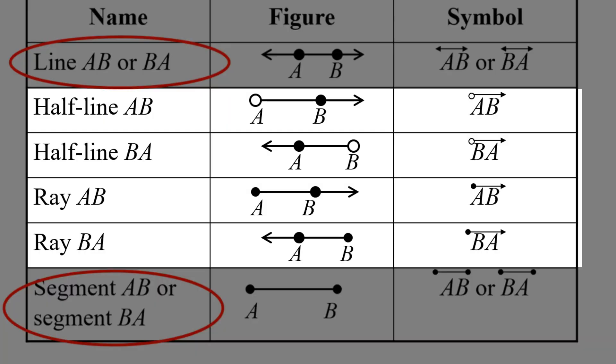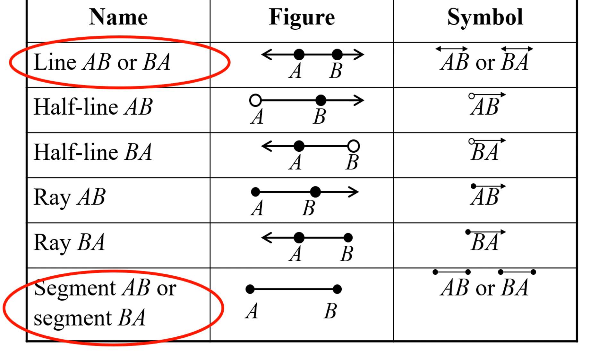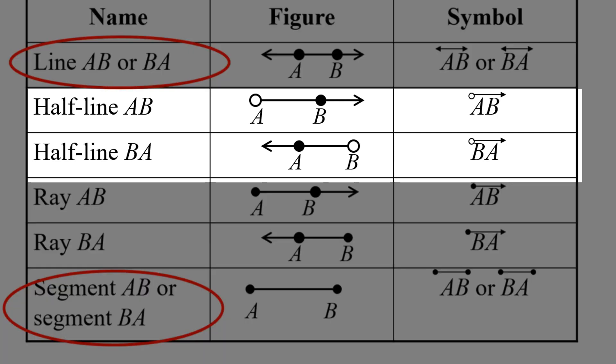This is not the case for half lines and rays. For half lines and rays, the first letter you list has to be the end that doesn't have an arrow, the one where the ray or half line ends. So, for example, to say half line AB is different than to say half line BA.